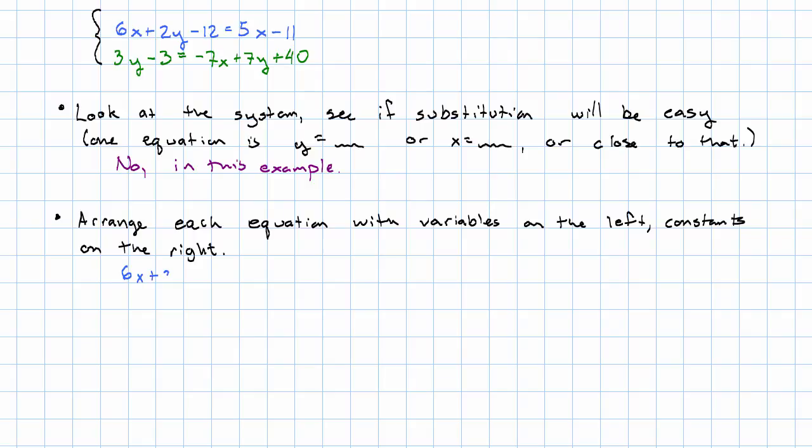So, 6x + 2y - 12 = 5x - 11. We need to get rid of the x on the right, so we'll subtract 5x. We have x + 2y - 12 = -11. We'll add 12 to both sides. So, x + 2y = -11 + 12 is positive 1.